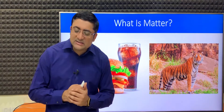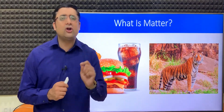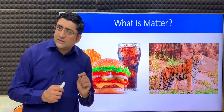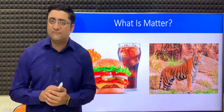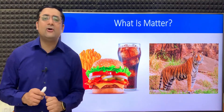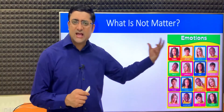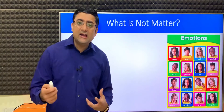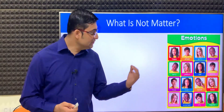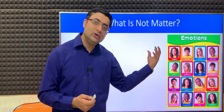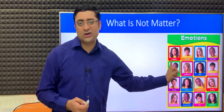I hope the concept of matter is clear. Now I want you to think of something which is not matter — something which does not occupy space and does not have mass. The answer is emotions. Happiness, sadness, anger — these are all examples of things which are not matter. Do they occupy space? No. Do they have mass? No. So these are things which are not matter.